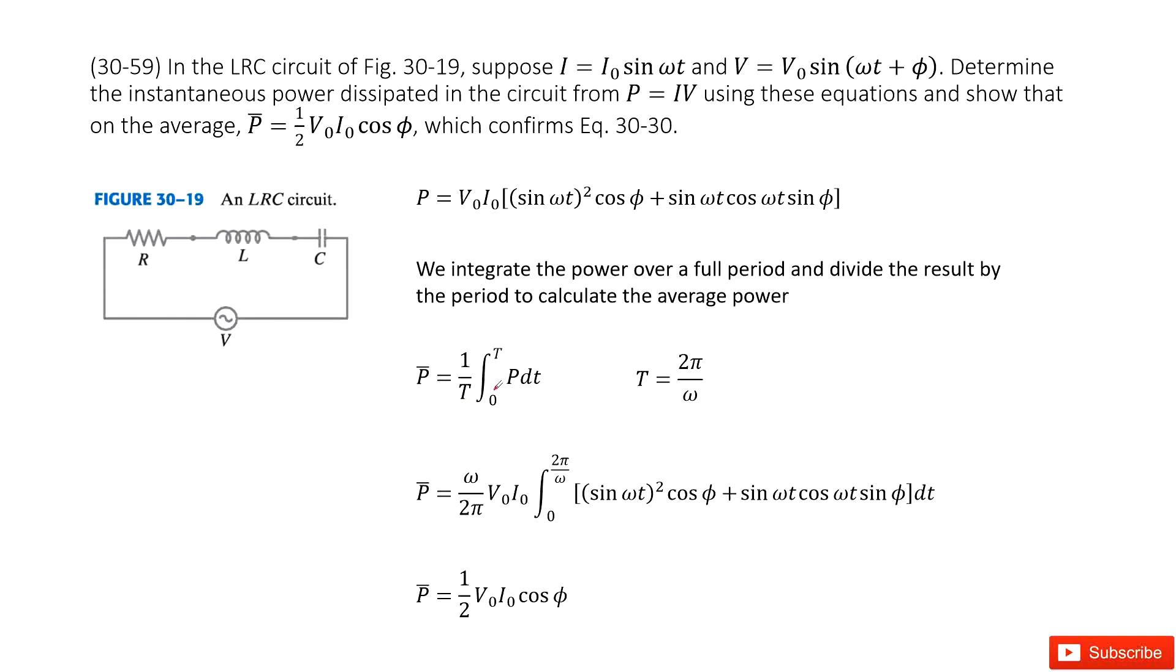And then we know the period T is 2π divided by ω. This is a sine function, so T = 2π/ω. Now we input T inside, and this integral equation looks like this one.